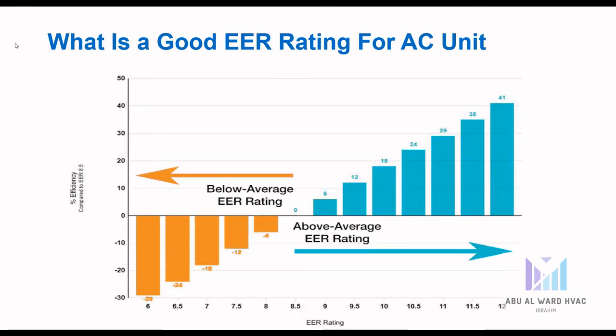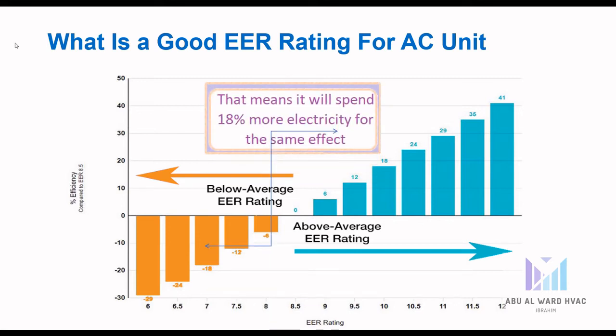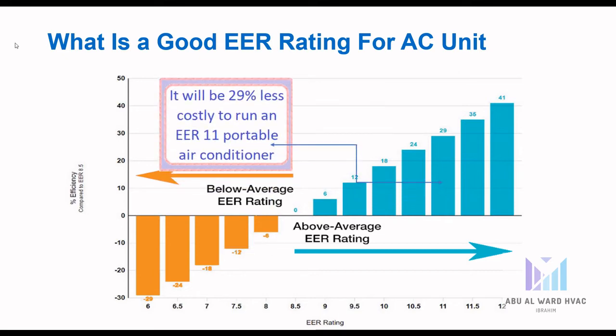What is a good EER rating for an AC unit? For example, a comparable baseline is EER equal to 8.5 — this is the average EER rating for a standard unit. Compared to this baseline, if we take a rating of 7, that means it will spend 18% more energy for the same effect. If we take EER 11, it will be 29% less costly to run than a standard portable air conditioner.